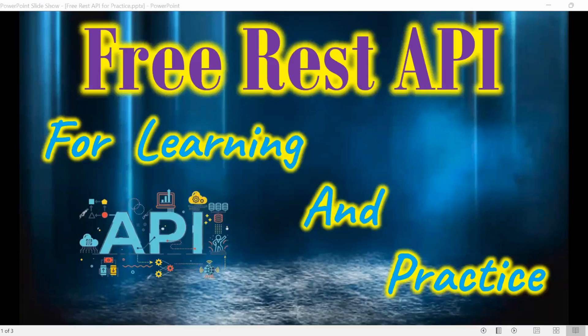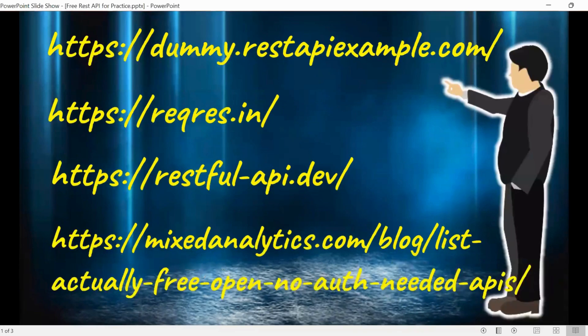In this session I'm going to tell you about a few websites which provide free REST APIs for testing purposes. You can use these APIs for manual or automation learning. The websites are: Dummy REST API Example, Request Rest, Restful API Dev, and Mixed Analytics.com. I will tell you about these websites one by one and how you can utilize them for your learning purpose.